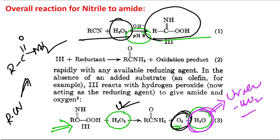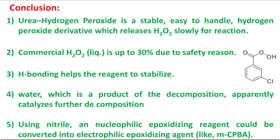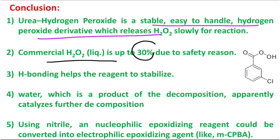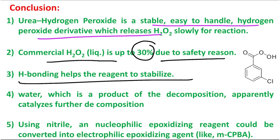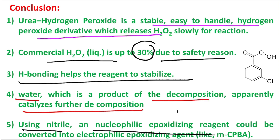In conclusion: urea hydrogen peroxide is a stable, easy-to-handle H₂O₂ derivative that releases hydrogen peroxide in a controlled fashion. Commercial H₂O₂ is limited to 30% concentration for safety reasons. UHP is stabilized by hydrogen bonding between the urea N–H and the oxygen of hydrogen peroxide. The water produced during reaction apparently autocatalyzes further decomposition of UHP to release H₂O₂. Most importantly, using a nitrile converts the nucleophilic H₂O₂ into an electrophilic oxidizing agent analogous to MCPBA.